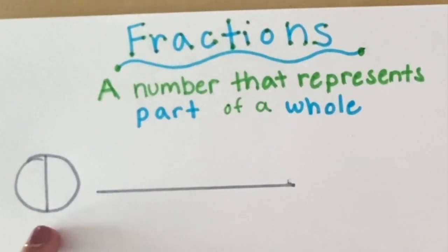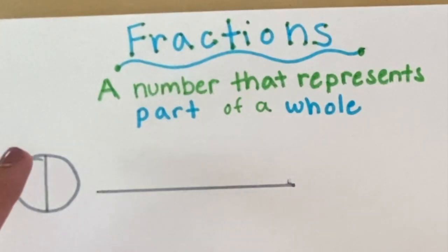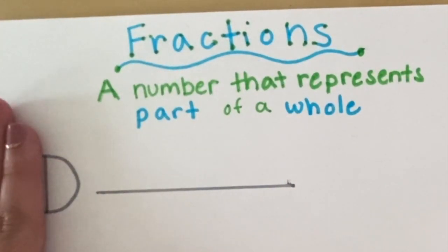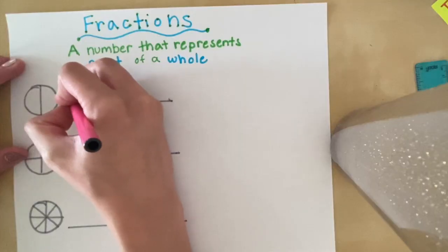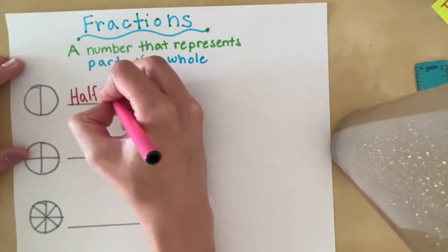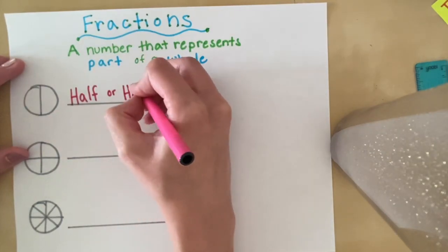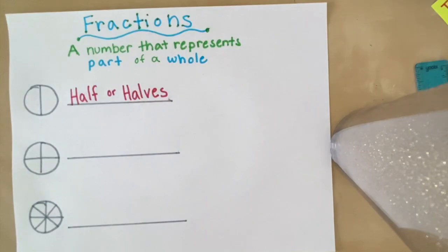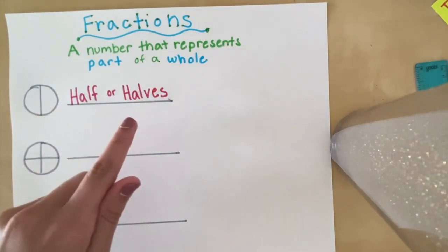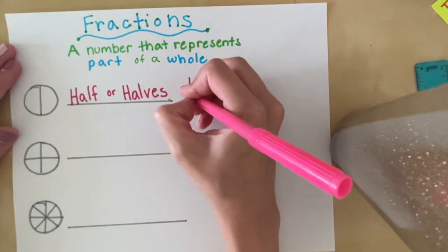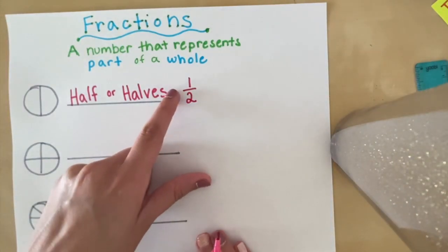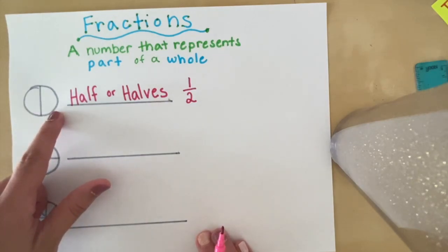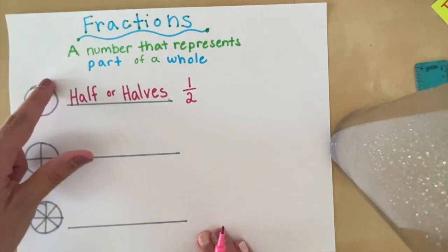Let's take a look at this first one here. We have one circle that's divided into two parts. What would you call one of these parts? You'd call them one half, or two halves. The number representation for a half, or halves, is going to be one over two. The reason we put a one over two is because there are two pieces, and we're just talking about one of them.